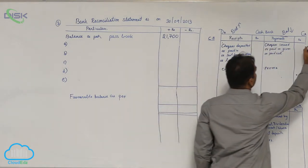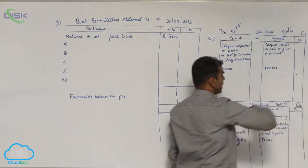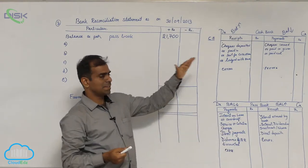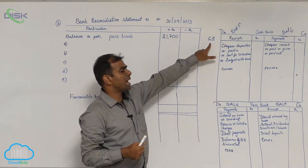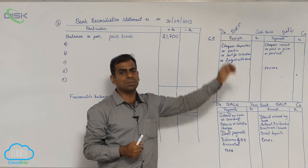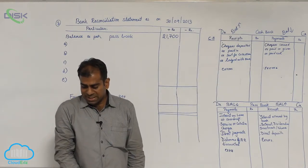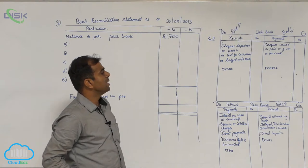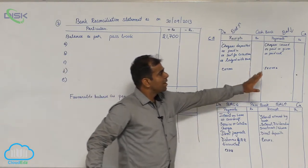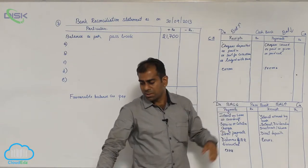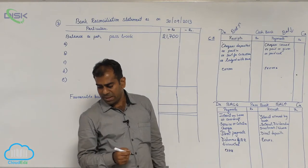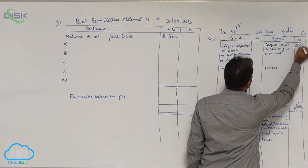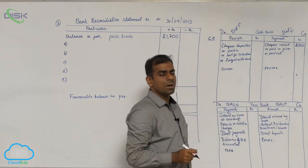Since pass book balance is given, cash book balance will be our target. I have made the format empty for convenience — you can refer to it and check whether the target balance, that is cash book balance, is increasing or decreasing. Statement A states cheques issued. Look into the format and see where you find the words 'cheques issued' — it is on the credit side of the cash book. Cheques issued but not presented for payment: 2,500.